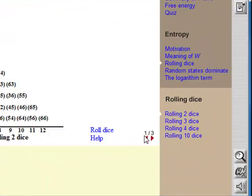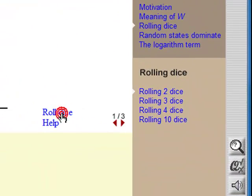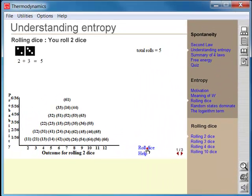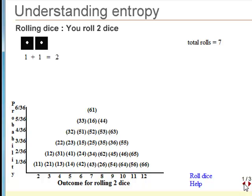The series of 2, 3, 4, and 10 dice are designed to show you that as the number of dice increases, so the number of accessible states, W, increases. Very quickly, the number of random states starts to dominate and it becomes less and less probable to roll anything but a random state with a small range of outcomes.